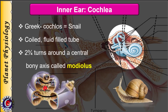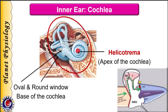Modiolus contains cell bodies of cochlear nerve fibers in the form of spiral ganglion. Here is the cut section of the cochlea showing the modiolus. Apex of the cochlea is called helicotrema and the base of the cochlea is formed by the oval window and round window. As you can see in this picture, here is the oval window where the footplate of the stapes is attached, and this is the round window.